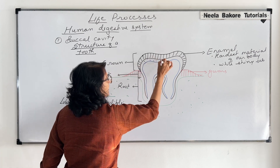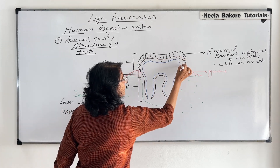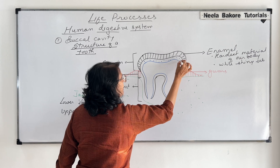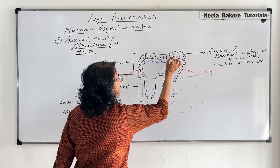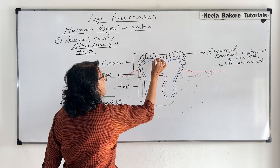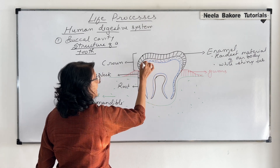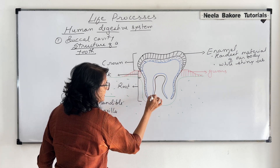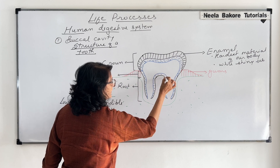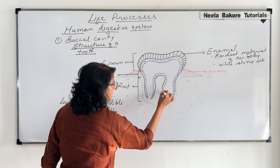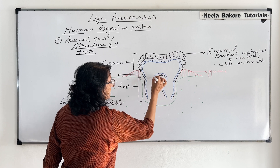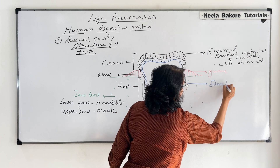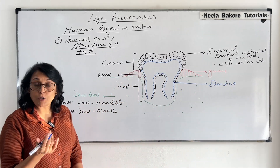This dotted part which we are talking about — this is dentine. It makes the major part of our tooth. Dentine is not very white; it is a little creamish. It is also hard but not as hard as the enamel is.